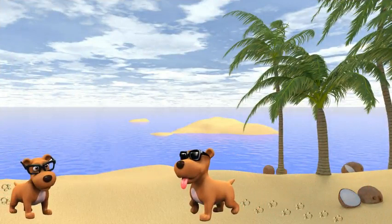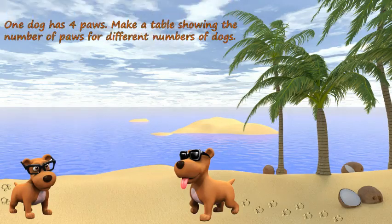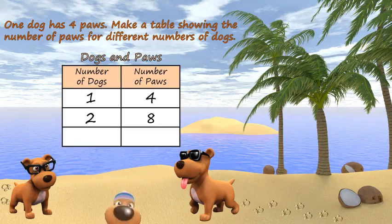Today Bubba was like, 'Hey, did you ever notice I've got four paws?' And Bubba was like, 'Well, if I've got four and you've got four, this sounds like cool information we could put in a table.' So if we make a table with the number of dogs and the number of paws, we know that if there's one dog we have four paws, two dogs we have eight paws, and three dogs we have twelve paws. Pretty cool — it's like a paw pattern.